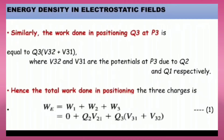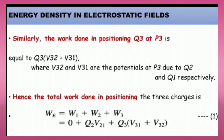The total amount of work done in positioning all three charges is We = W1 + W2 + W3. Since W1 = 0, the equation becomes We = 0 + q2·V21 + q3·(V31 + V32). This is our first equation.